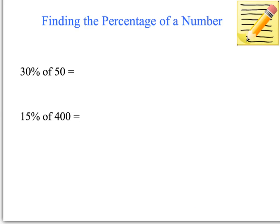Okay, so we have, remember, the first step is to write it as a fraction, so 30 over 100, changing it to a multiplication sign, and writing the next number.